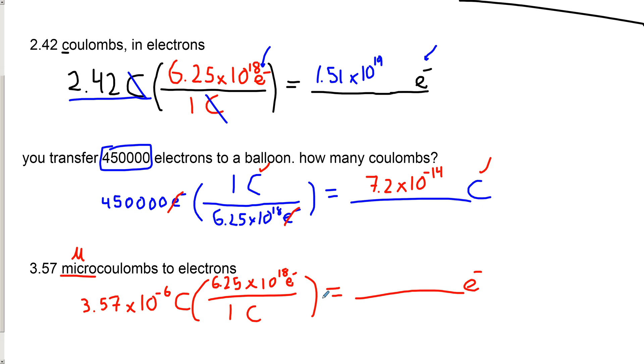And we get still a large number. 2.23 times 10 to the 13. That's still a huge number of electrons. So that just really nails it. It drives it home that, yes, a coulomb contains an enormous amount of electrons.